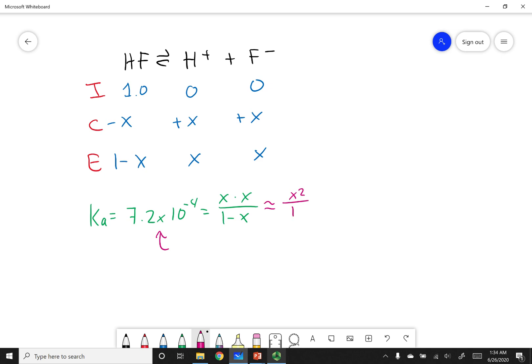I can solve for x. x happens to be 0.027 molar, which is less than 5% of my 1, so my assumption was correct. Remember that x equals my H+ concentration in this problem. I can find the pH, which equals the negative log of my H+ concentration. I plug this number in and get a pH of 1.6.